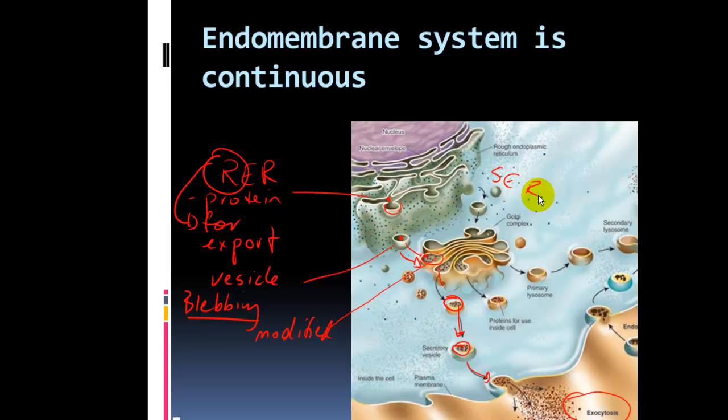If we wanted to look at the SER, we could do that, and in the case of the SER, it would be a lipid that was being manufactured. So each one of these organelles has its own function on this assembly line to get this product, whatever it is, a protein or a lipid, out of the cell.